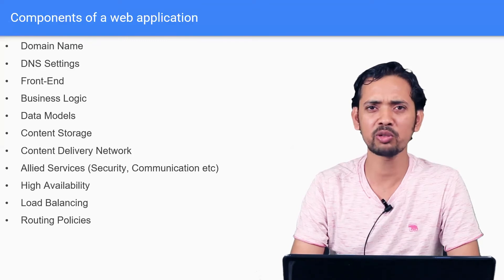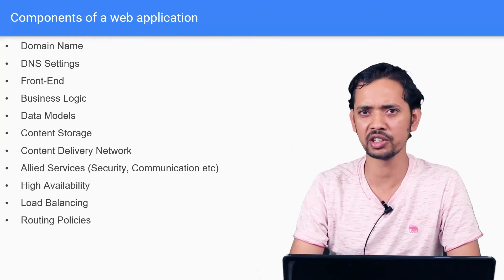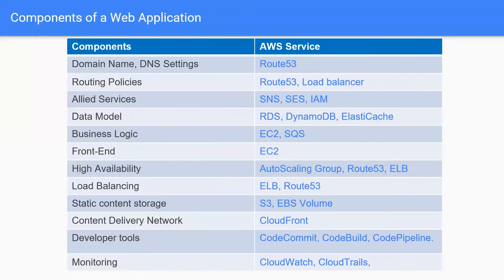Now let's see what AWS services are available to support these various components of a web application. Starting with domain name and DNS settings — there is a service called Route 53 from AWS. Using Route 53, AWS also works as a domain registrar, so you can purchase a domain name directly from AWS and do all the settings on your cloud itself. Route 53 also has the capability to route user requests, and you can create various routing policies to re-route user requests across regions.